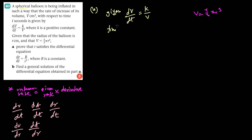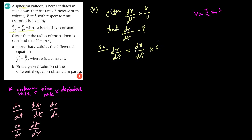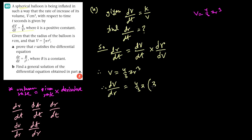We have to find dR by dt — that is the unknown rate. So the unknown rate dR by dt equals the given rate dv by dt times the derivative dR by dv, so that dv cancels and we get dR by dt. The formula for the volume of a sphere is 4/3 π r cubed, so dv by dr is going to be 4/3 π times 3r squared, which simplifies to 4π r squared.